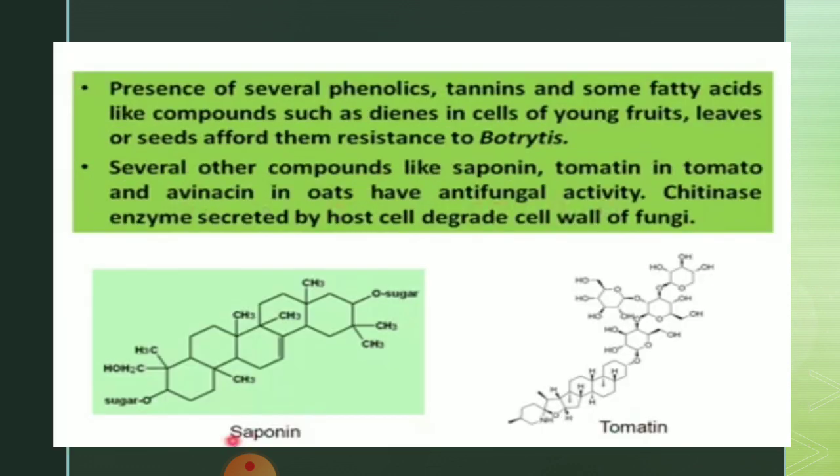The presence of several phenolics, tannins, and some fatty acid-like compounds such as dienes in cells of young fruits, leaves, or seeds affords them resistance to Botrytis. Several other compounds like saponin, tomatine in tomato, and avenacin in oats have anti-fungal activity. Chitinase enzyme secreted by the host cell degrades the cell wall of fungi.